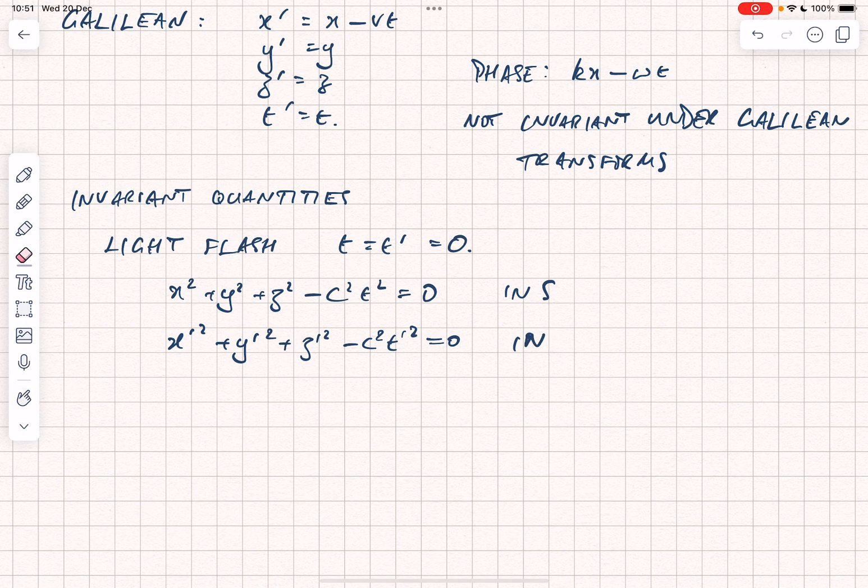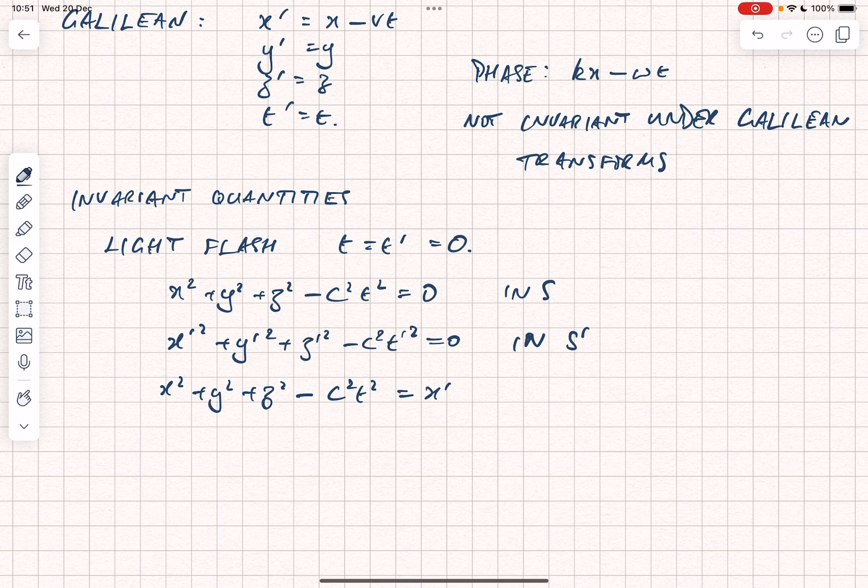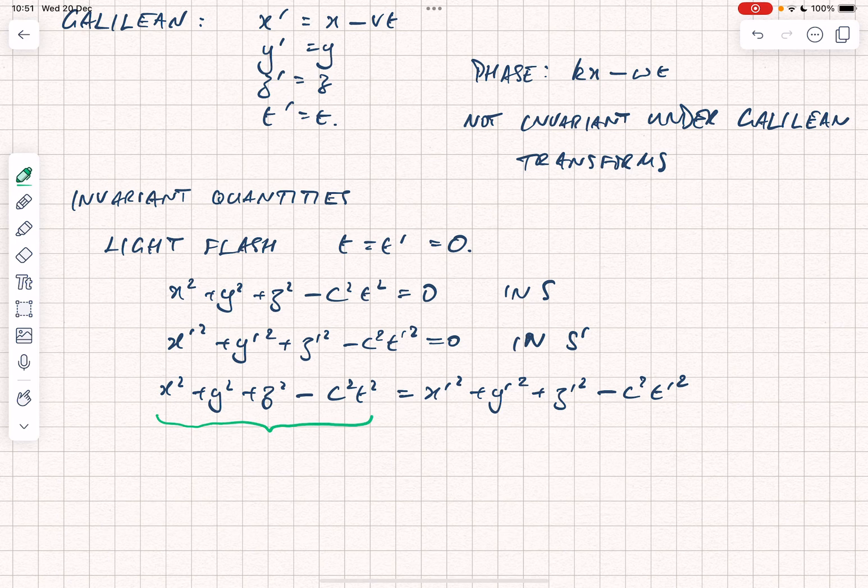And so, what we can say is that x squared plus y squared plus z squared minus c squared t squared must equal x prime squared plus y prime squared plus z prime squared minus c squared t prime squared. And this quantity here is known as the interval.